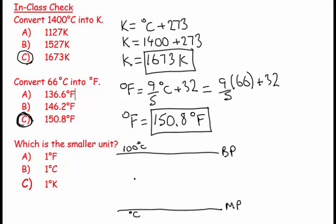So that is 100 degrees. And then if we go to the Kelvin scale, this is 373 and this is 273, and if you look at that difference, that's 100 degrees.